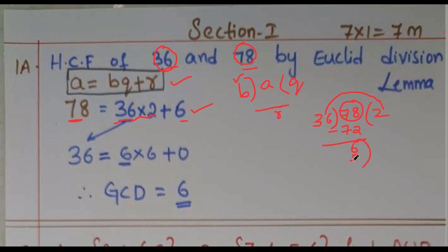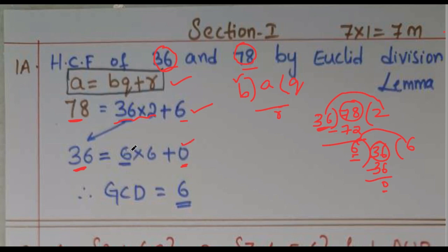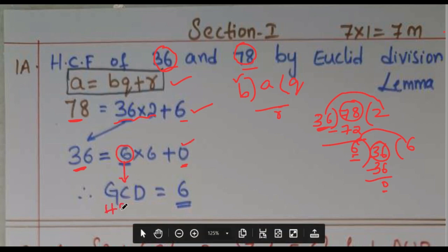Now 6 becomes the divisor and 36 becomes the dividend. 6 sixes are 36, and 36 minus 36 is 0. So 36 equals 6 into 6 plus 0. When the remainder is 0, the divisor becomes the GCD or HCF. Sometimes they ask HCF, sometimes GCD — both are one and the same. Don't get confused.